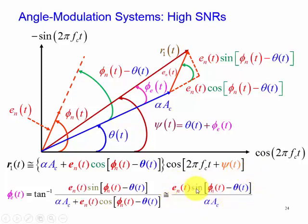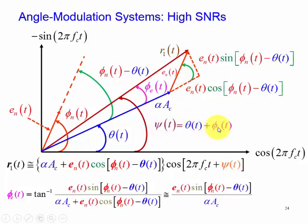This is our final result, in which our message is corrupted by theta_e, the error angle due to the noise source. We have psi(t) consisting of two components — theta(t) and phi_e(t) — and we evaluate phi_e(t) in terms of this expression: e_n(t) sine(phi_n minus theta(t)) divided by alpha_ac.